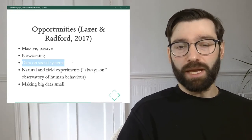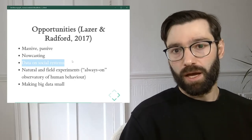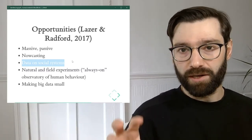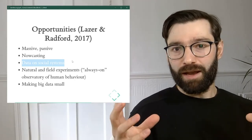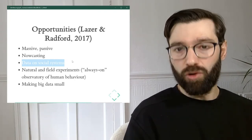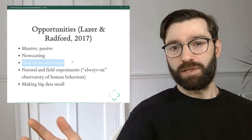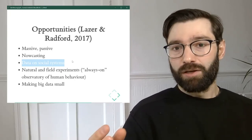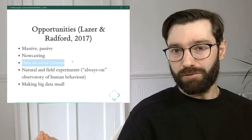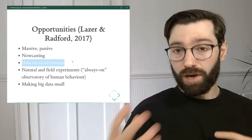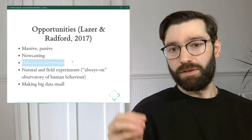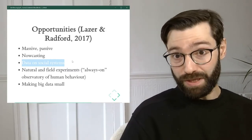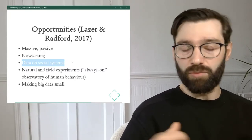The third opportunity is what they call data on social systems. It relates to the idea that a lot of these datasets are collecting holistic systems — not just a section or segment of a population, but in many cases the entirety. For example, Facebook data doesn't collect a fraction of Facebook users; if you're interested in online behavior in social networks, Facebook data gives you the entire system, not a subset. This has a lot of implications, often beneficial, for how we do inference and statistics.